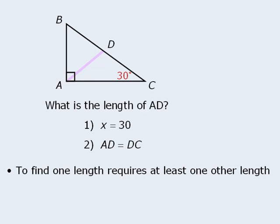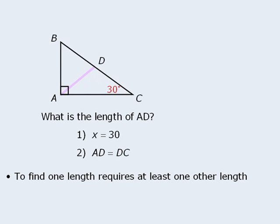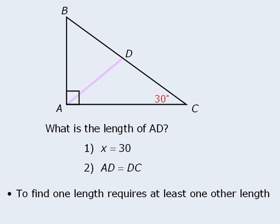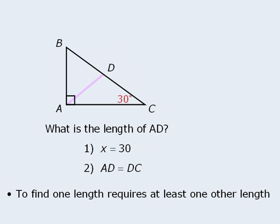No. Our rule tells us that to find one length, we must have at least one other length. We can take the figure shown here and make it larger while still maintaining the angles. So the angles remain the same, but the length of side AD changes. Since statement 1 does not force side AD into having just one length, statement 1 is insufficient.